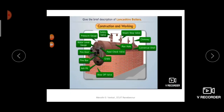Now I will explain the construction of the Lancashire boiler. The first part is the safety valve — its purpose is to release excess steam pressure when the pressure inside the boiler exceeds the maximum limit. Next is the water level gauge, which indicates the level of water inside the boiler. Then the pressure gauge, which gives you the pressure of the steam inside the boiler. The fire door is used to place fuel inside the boiler.